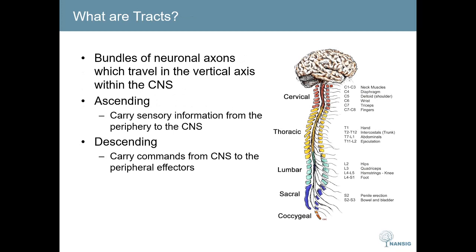So what is a tract? A tract is a bundle of neuronal axons which travel vertically within the central nervous system. This is in opposition to association fibres, which travel anteriorly to posteriorly and posteriorly to anteriorly between any one of the lobes within the same hemisphere, and also in opposition to commissures, which travel anywhere between two hemispheres.